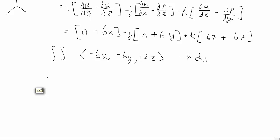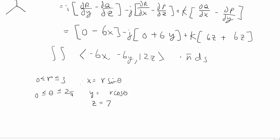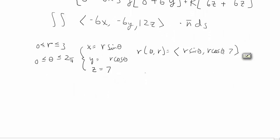We said r goes from 0 to 3, and theta goes from 0 to 2π — those are our new variables. We rewrite the curve in polar coordinates: x = r sin θ, y = r cos θ, and z still equals 7. So rewriting the curve using r and theta, we have the vector (r sin θ, r cos θ, 7). To find the normal vector, we take the cross product r_θ × r_r, expecting a positive direction based on the right-hand rule.